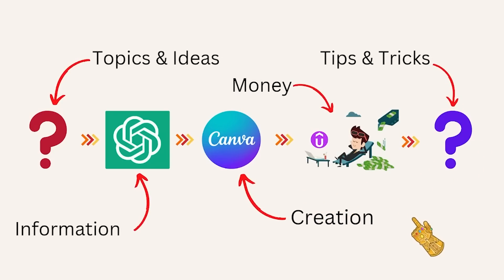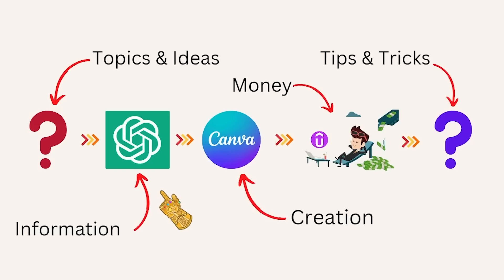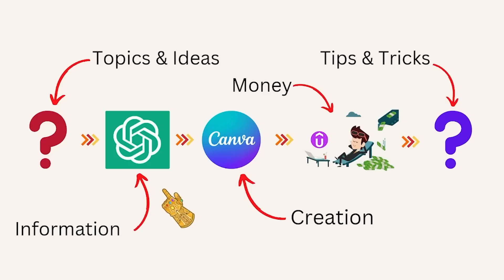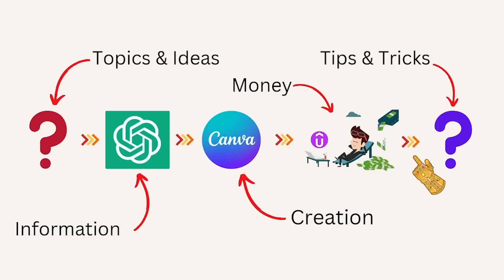Here is an overview of the process. First, we start with generating a topic and ideas — I'll show you a tool to find in-demand topics and how to title your course. Then we collect information using ChatGPT, which will write an outline and generate the content. After that, we move to Canva to create slides, record them, and edit them. Finally, we upload to Udemy, and at the end I'll show you tips to get more sales and views on your courses for free.